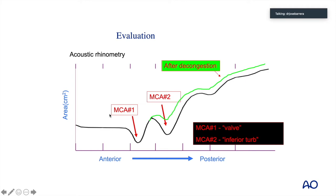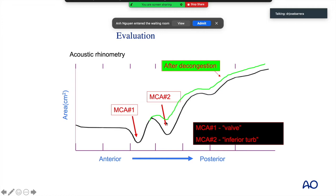The two areas of variable resistance are the valve — which could be internal or external — and the inferior turbinate.